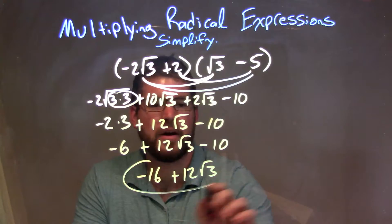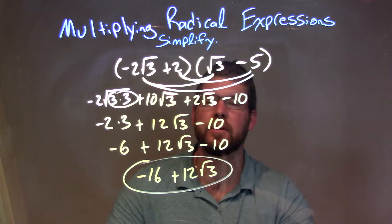We can combine these two, and that's it. Our final answer here is just a negative 16 plus 12 square root of 3.